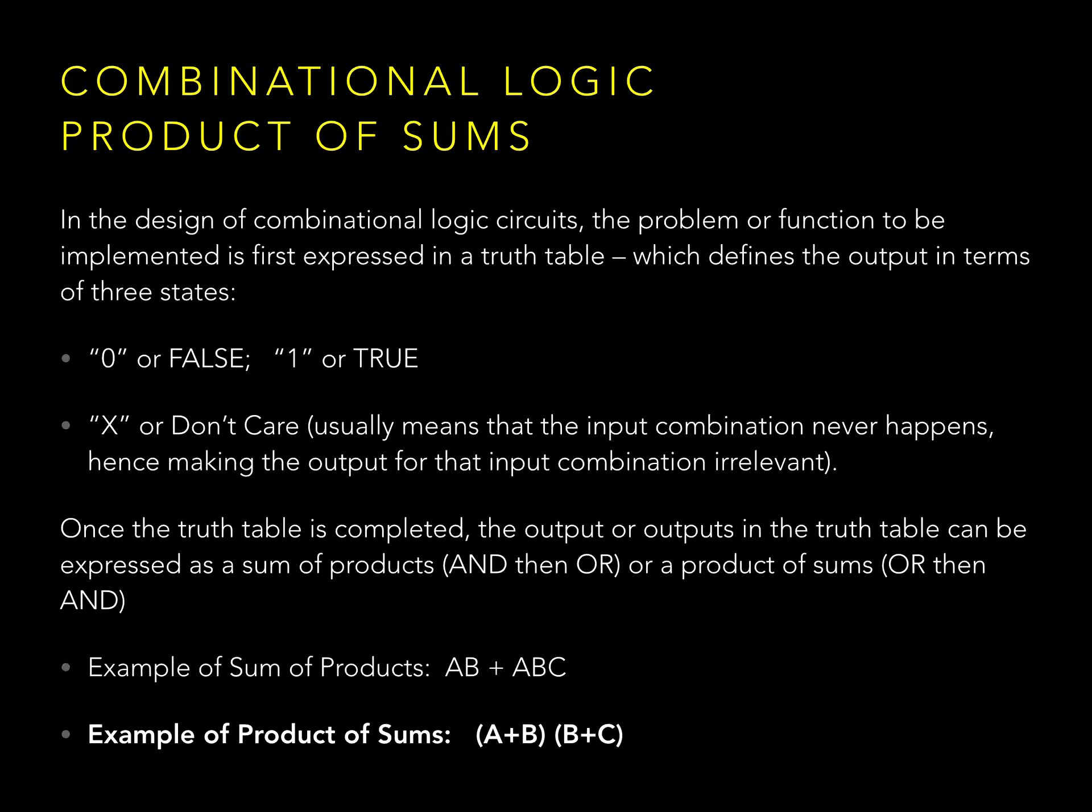But just like sum of products, the product of sums can express information in a truth table that contains three possible values: zeros, ones, or don't cares. Don't cares are commonly expressed as x's and are typically outputs whose input combinations never occur, hence making the output for that input combination irrelevant.